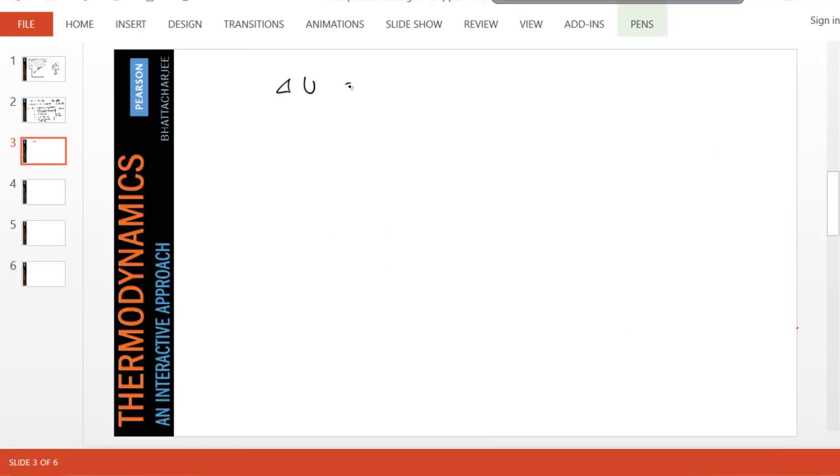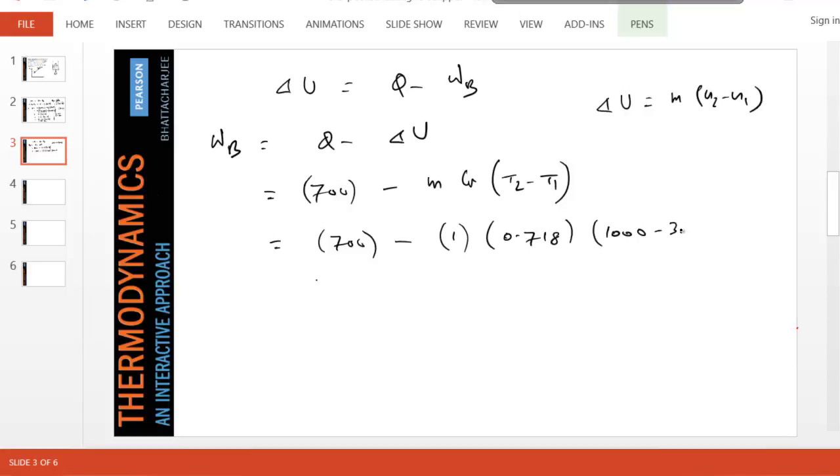Now we can find W because delta U is Q minus W_B. We can use this equation: W_B would be Q minus delta U. Q we already found is 700, and delta U is M*C_V*(T_2 - T_1). Recall that U_2 minus U_1 for a PG model—by now you must know, otherwise go to table J and look up the PG model. Once we substitute these numbers—1 kg, 0.718, 1000 minus 300—we get the boundary work to be about 201 kilojoules.